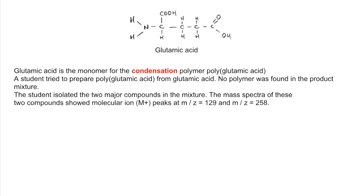Student tries to prepare the polymer from glutamic acid but doesn't get any polymer in their product mixture. Student isolates two major compounds in the mixture and we've got mass spectra information for the two compounds showing molecular ion peaks at M over Z 129 and 258. So those masses are very important bits of information.